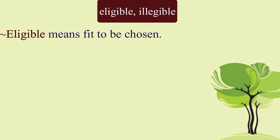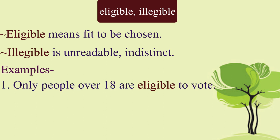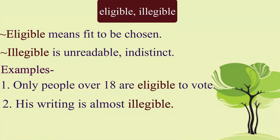Let us also look at 'eligible' and 'illegible.' Eligible means qualified or entitled. Illegible means not clear enough to be read, or indistinct. Please repeat after me. Only people over 18 are eligible to vote. His writing is almost illegible.